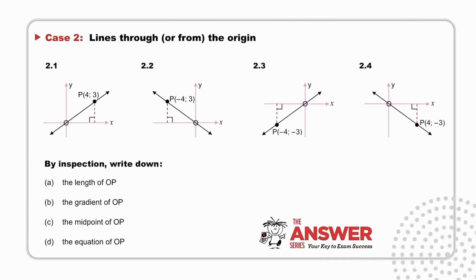Case 2: Lines through or from the origin. Note the coordinates of the points in each of the four cases, and then note the horizontal and vertical lengths. As for Case 1, we will, by inspection, write down the length of OP, the gradient of OP, the midpoint of OP, and the equation of OP. Pause while you consider your answers to these questions, but think carefully before reaching for any formulae. Rather, observe the sketch, apply your own thinking, and then just write down your answers.